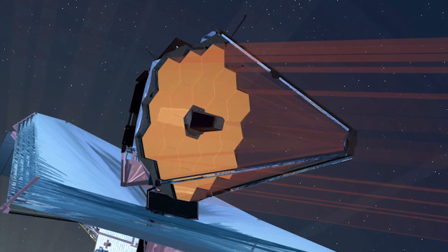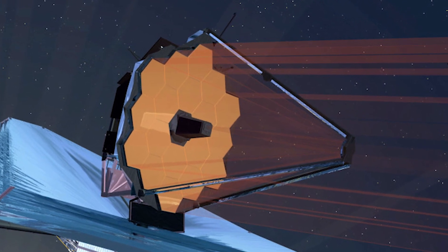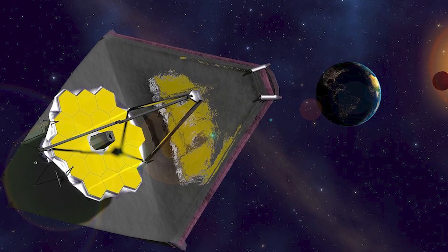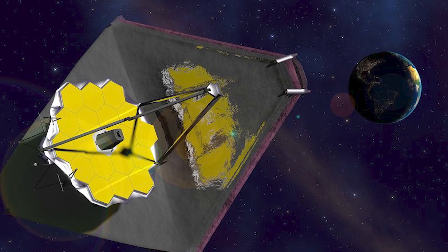Every image Webb sends back is a message in a bottle from the ancient cosmos, traveling billions of years across space to arrive at our tiny outpost in the Milky Way.